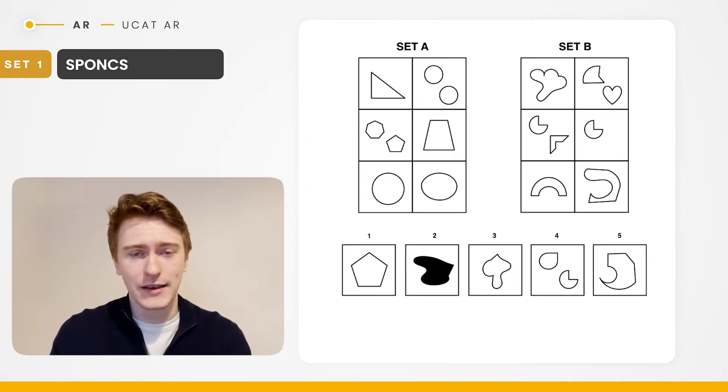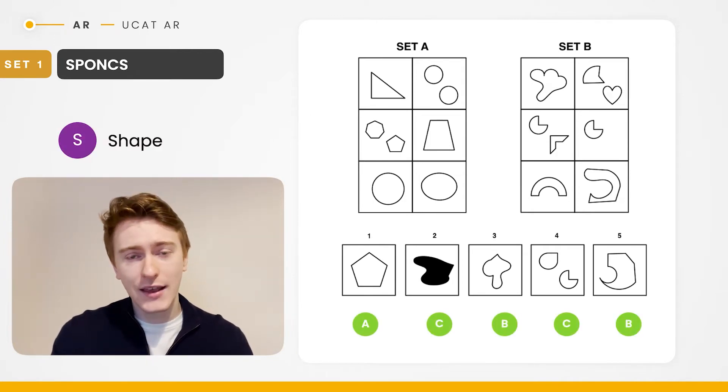I'm talking about the interior angles here. Whereas in set B you can see there's always at least one reflex angle in each shape that's present. And this is really important. So when we look through the answers you can see that test shape number one belongs to set A. And you can kind of eye gauge that because it's a regular sort of pentagon.